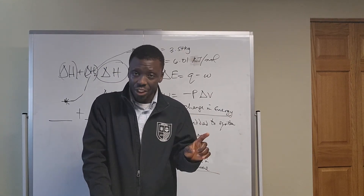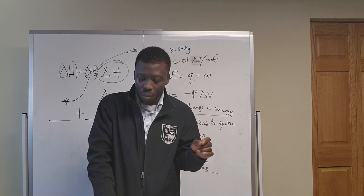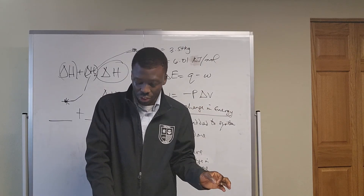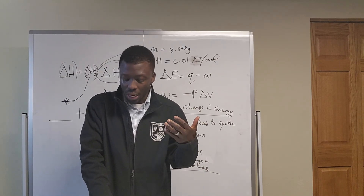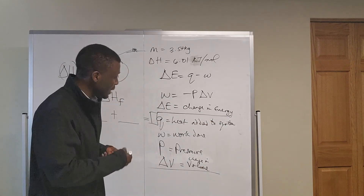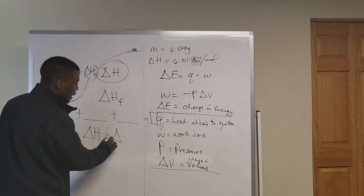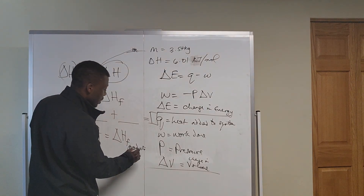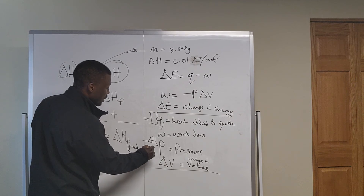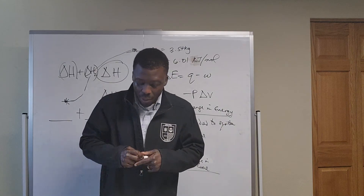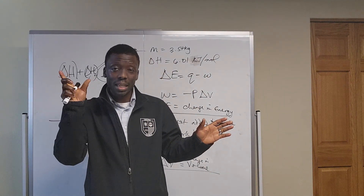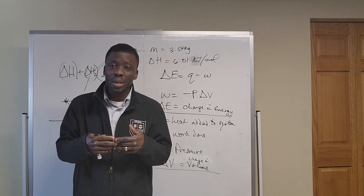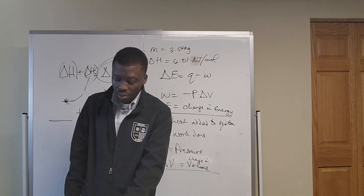There is delta H with a subscript F — that is the change of enthalpy for a reaction that forms a compound from its pure elements under standard conditions. That is the standard heat of formation. The standard heat of formation can be used to estimate the delta H of any reaction. The delta H equals the delta H_F of the products minus the delta H_F of the reactants. There are different values for delta H_F, and we don't expect you to memorize all of them — but if given a table, can you find the values you need? That's what matters.